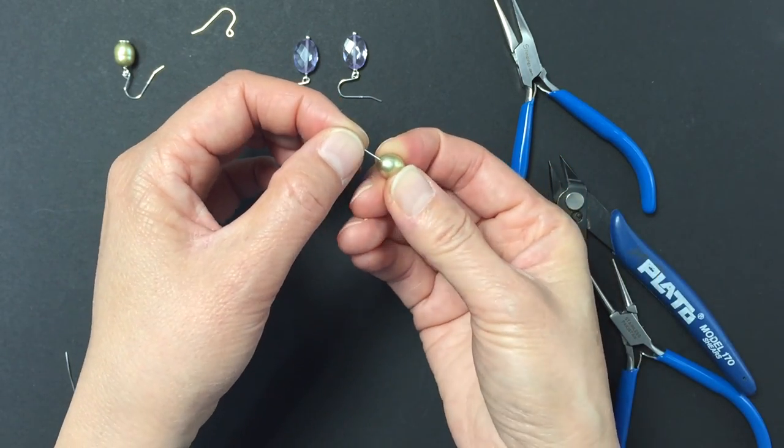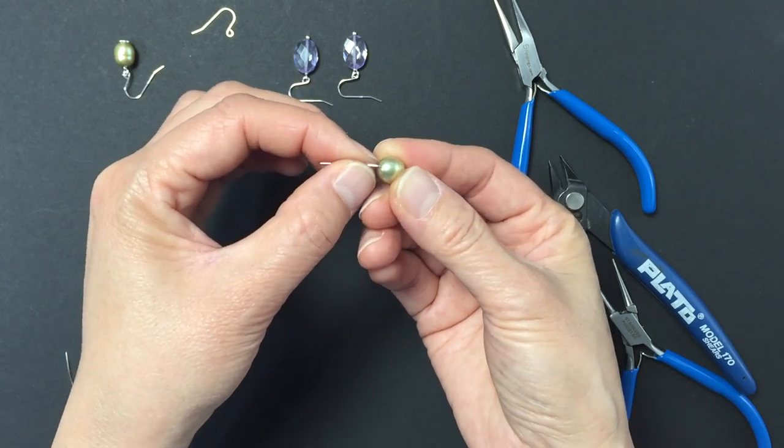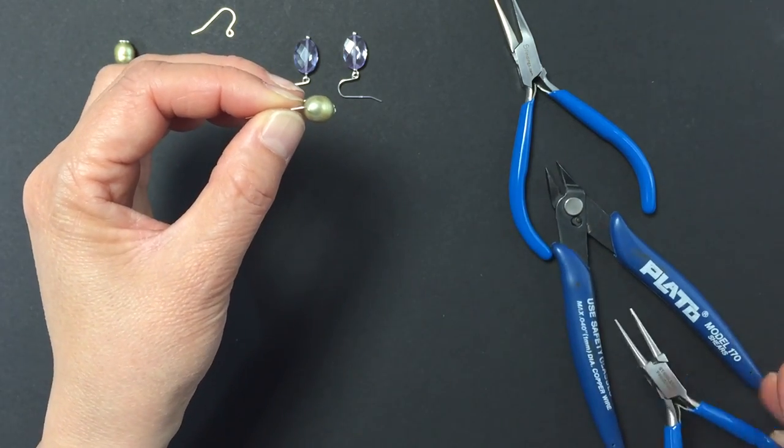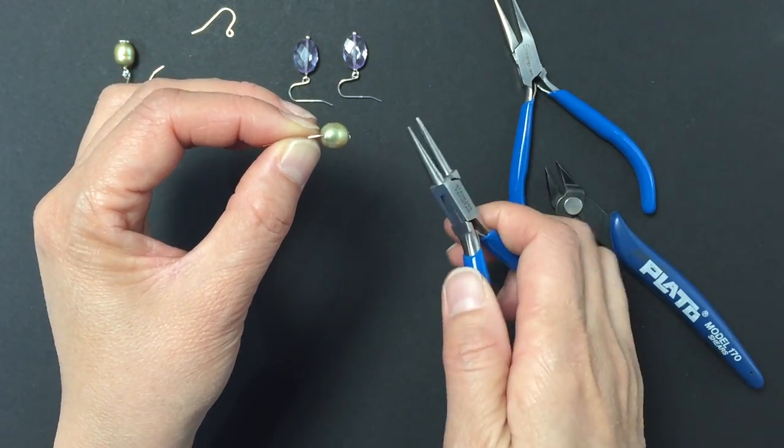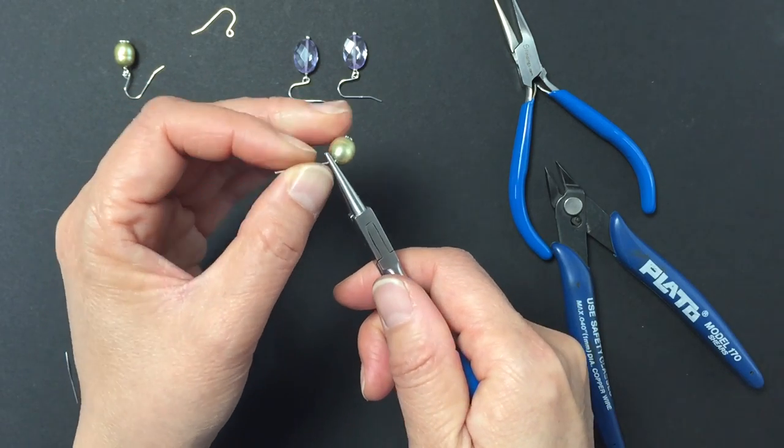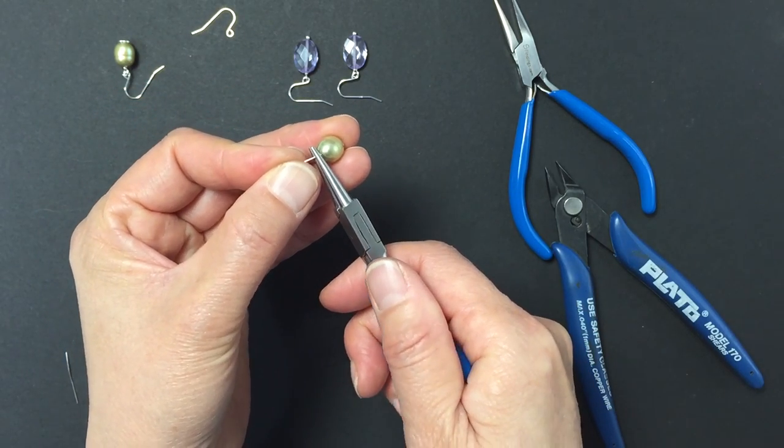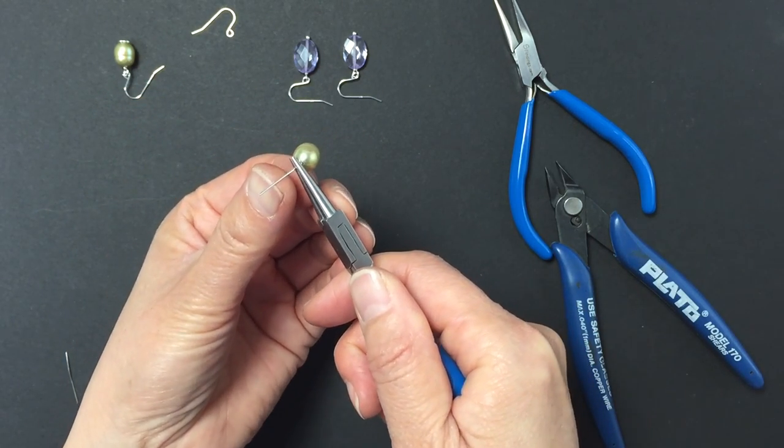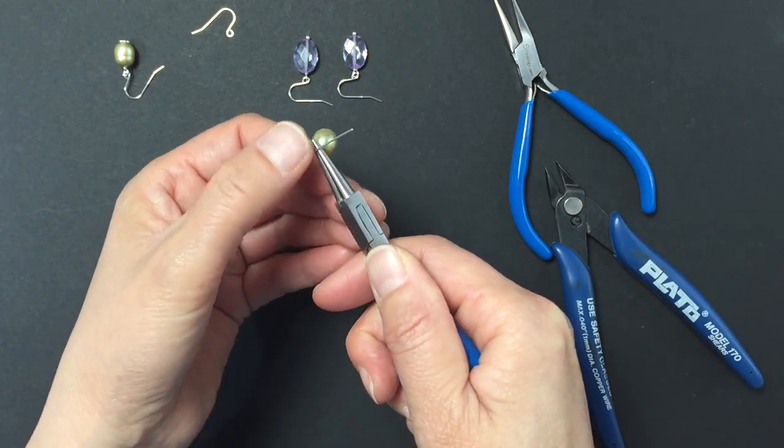Bend your wire at an angle. Using the round nose pliers, hold the wire firmly against the pearl. Then, wrap the wire over the pliers to form a loop.